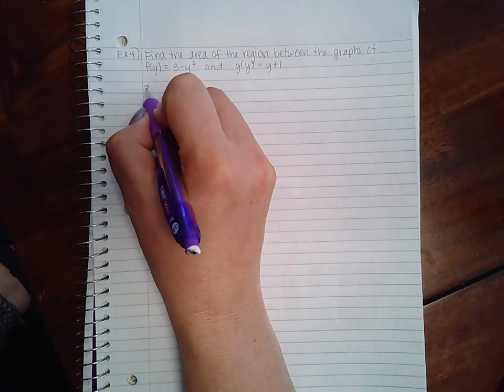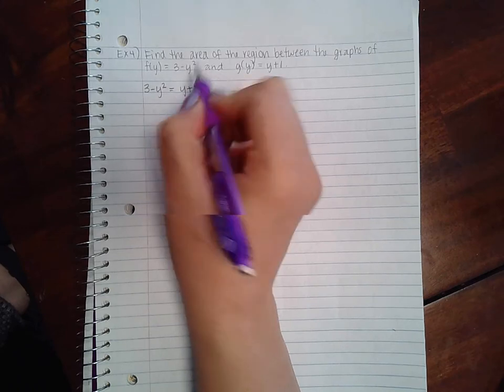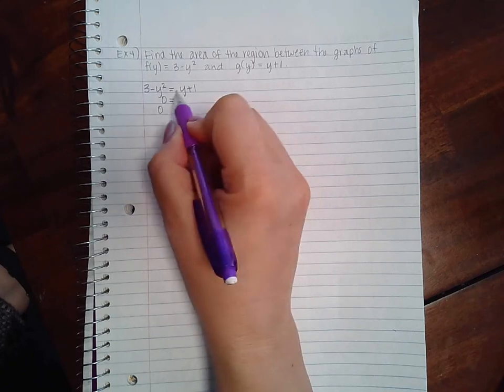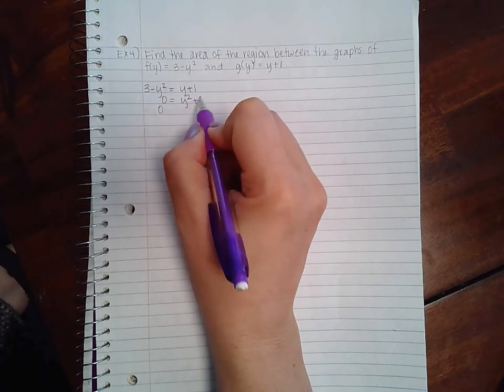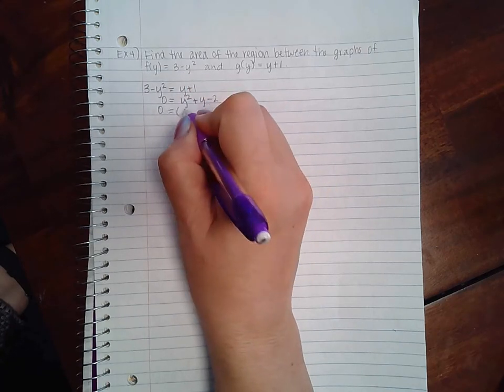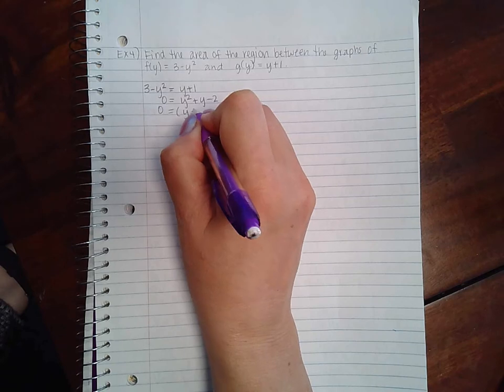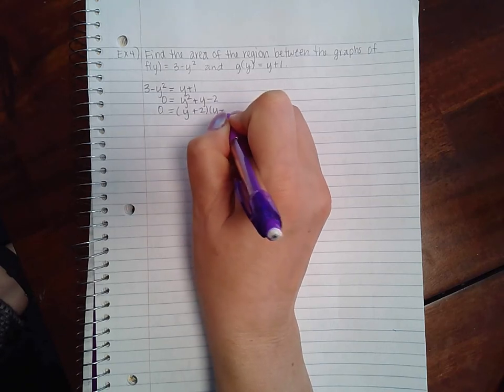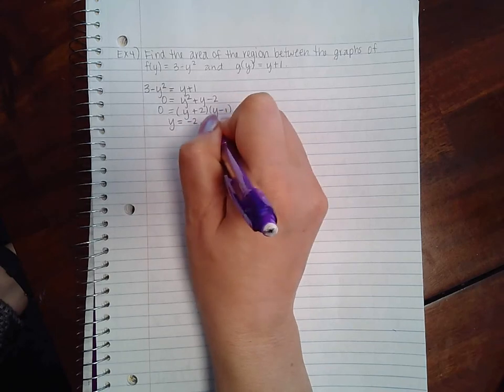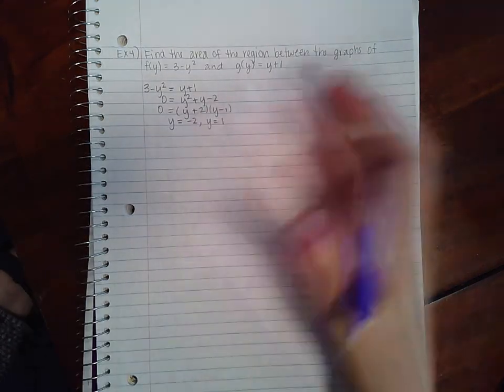In order for me to find them, I have to set my two functions equal to each other. If I move all the terms on the left to the right hand side, I will get y² + y - 2. If I factor that, I get (y + 2)(y - 1), which means y = -2 and y = 1.